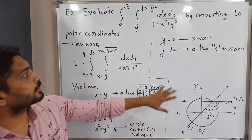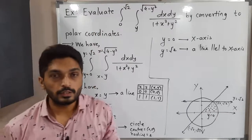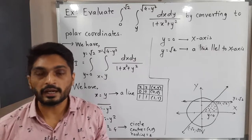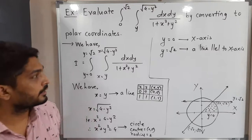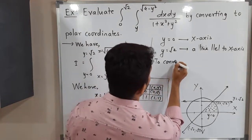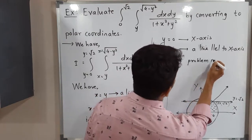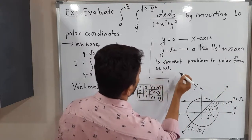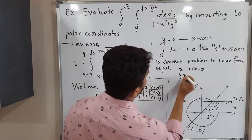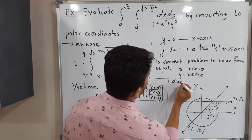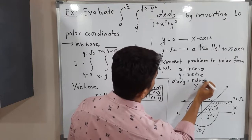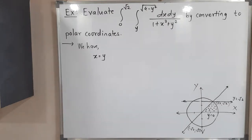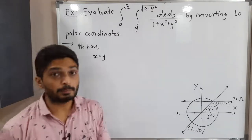Now the question is to solve this integration using polar coordinates. To convert the problem into polar form, we put x equal to r cos θ, y equal to r sin θ, and dx dy equals r dr dθ. We have to put all these values into the integral.